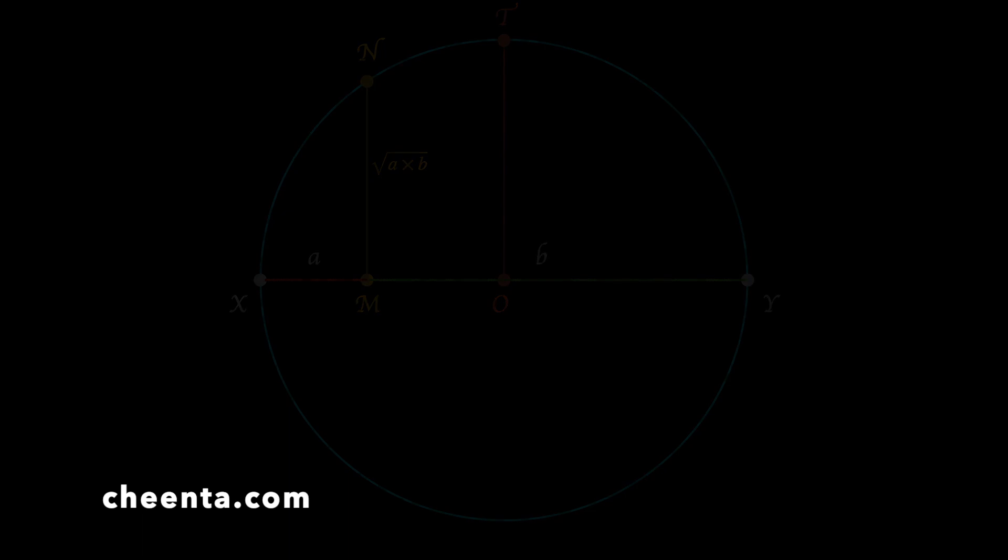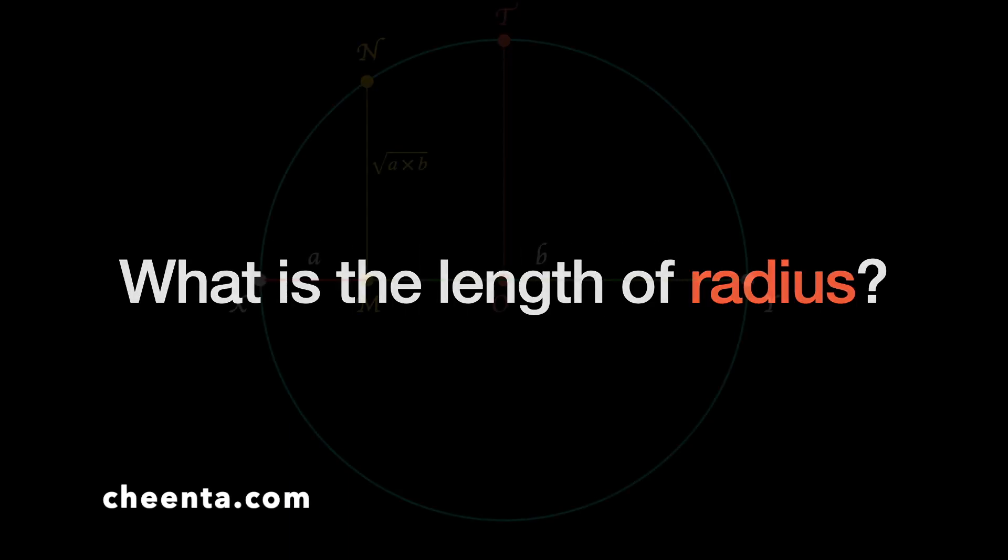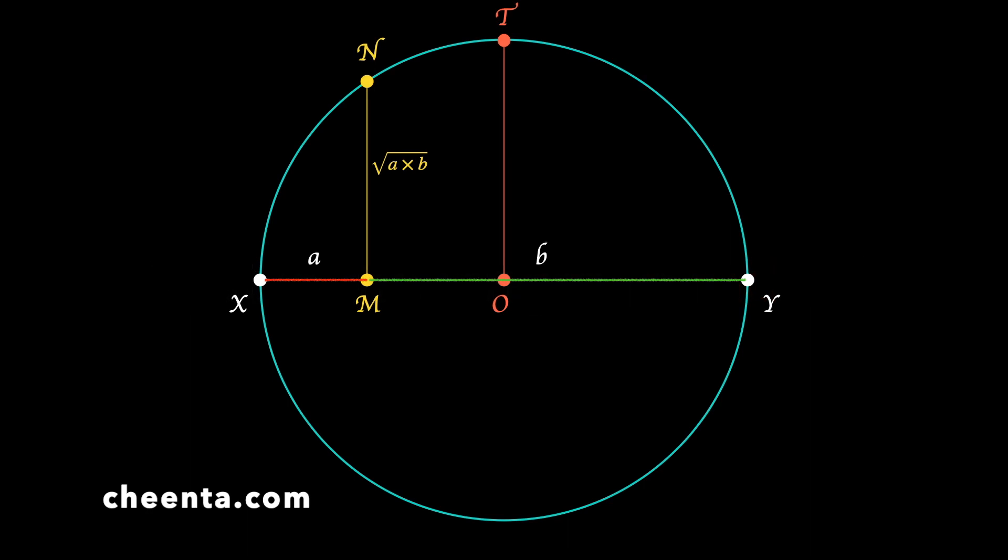Now let's talk about the radius. What is the length of the radius? The diameter is small a plus small b—that's the length of XY—so the radius must be (a+b)/2. We are almost done.